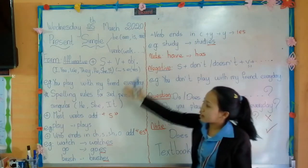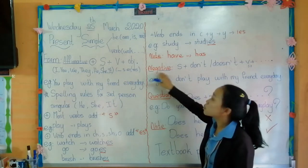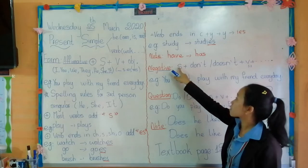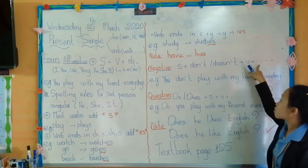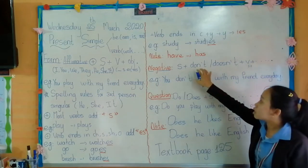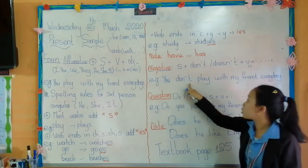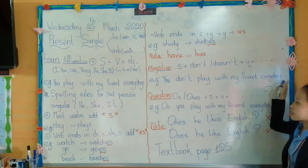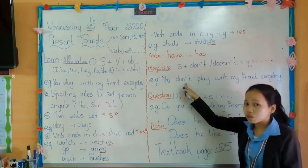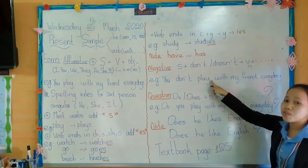So that is all about present simple affirmative or positive form. Now let's move to negative form. When you change it to negative form, in grammar we say the negative statement. The formula is: subject plus don't or doesn't plus verb — and this verb needs nothing added, because you use don't or doesn't already. For example: you don't play with my friend every day. When you use I, you, we, and they, use don't. But if you use with he, she, or it, use doesn't. And the verb needs no change.